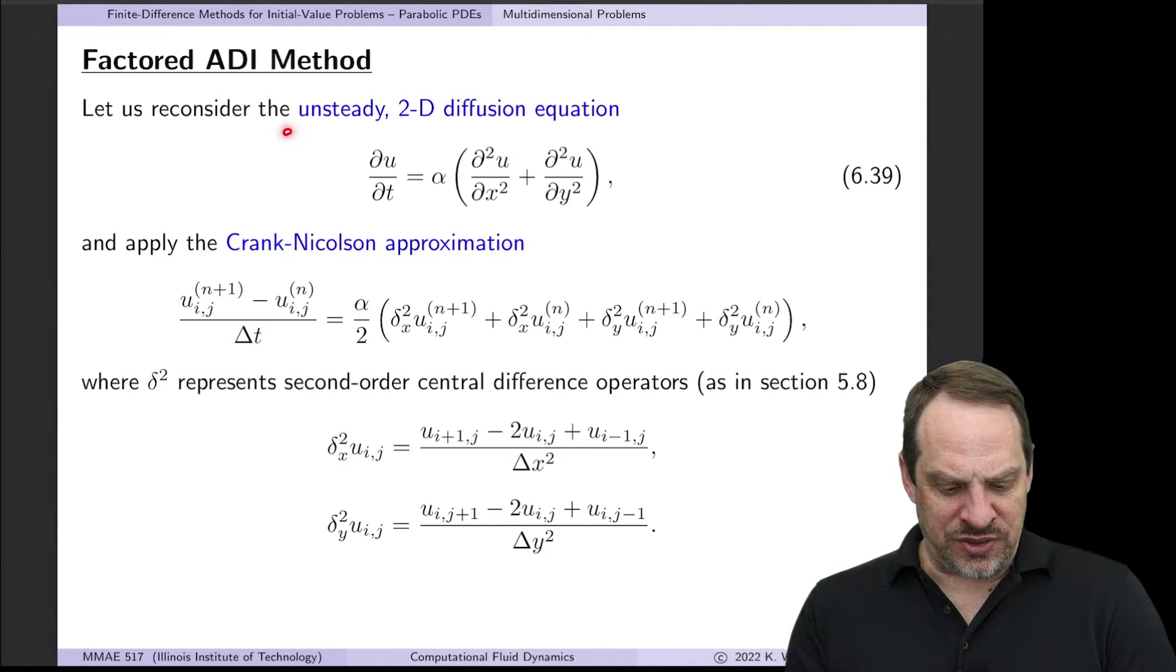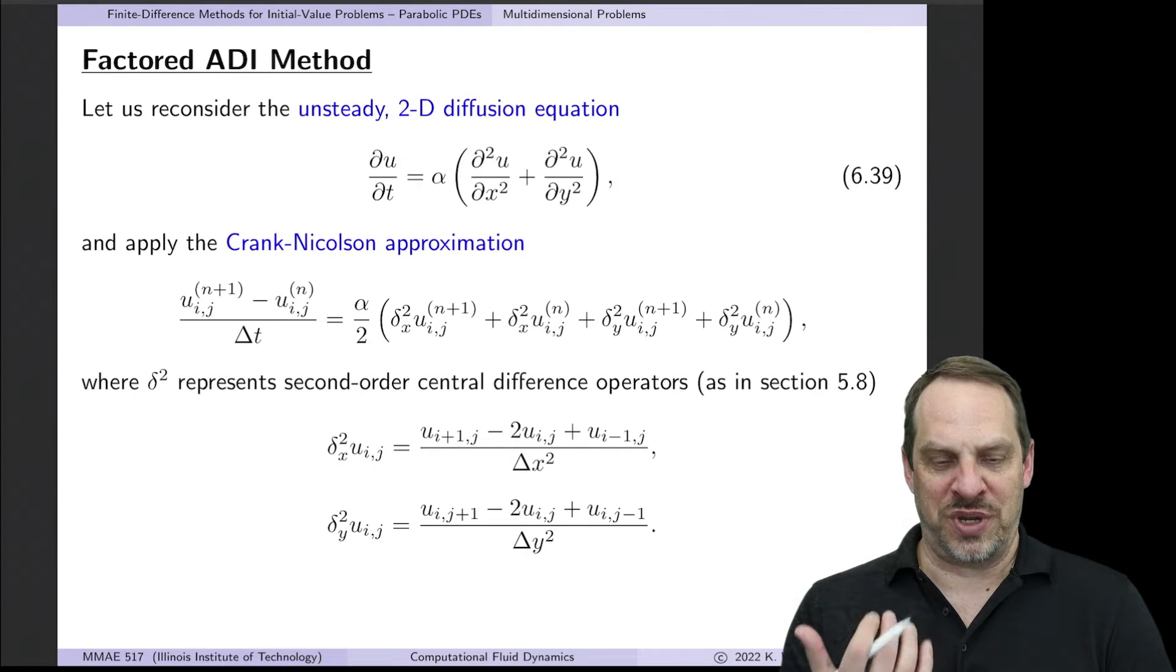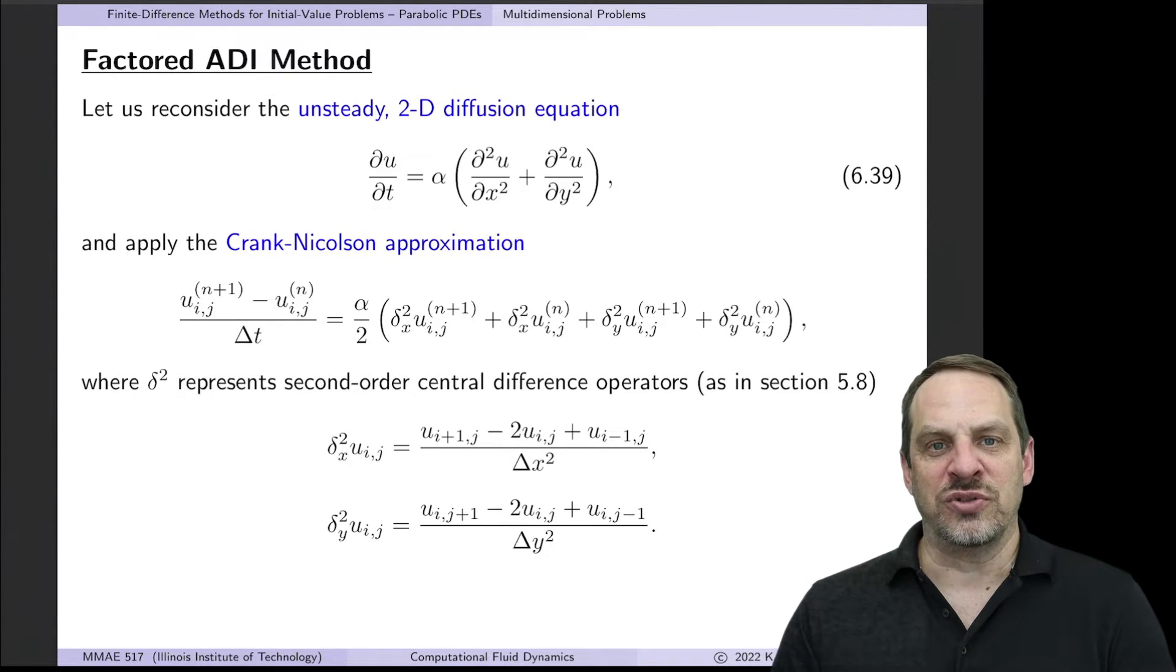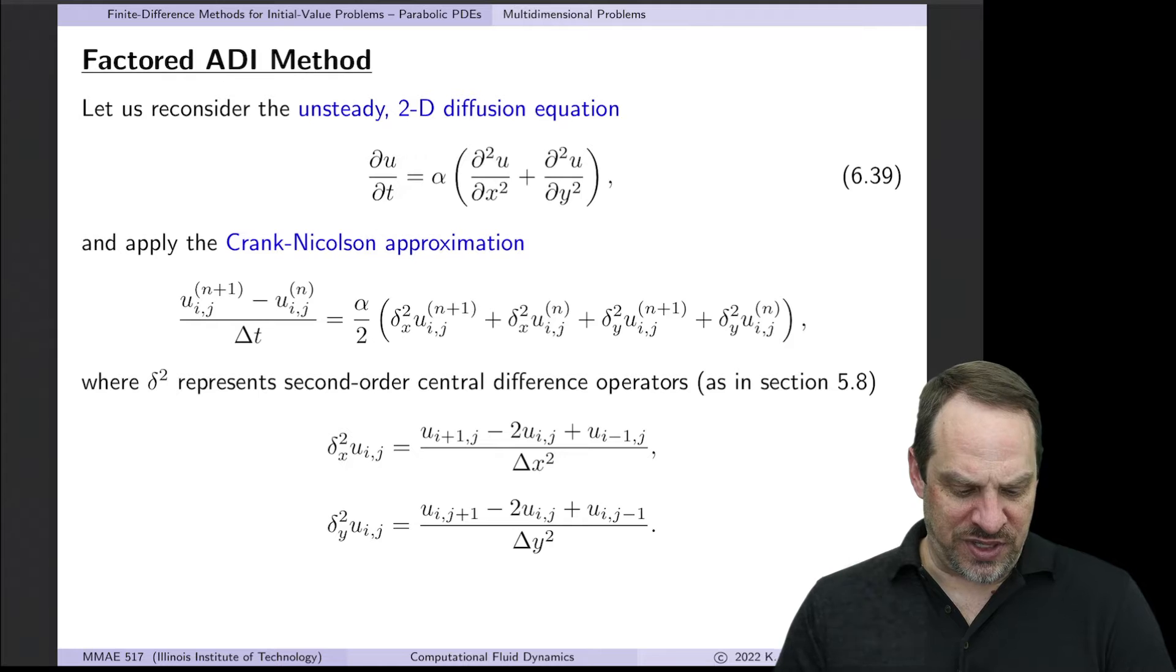So we're once again looking at the unsteady 2D diffusion equation. It has Laplacian on the right, second derivatives of u with respect to x and y, and then the partial u partial t term on the left-hand side.